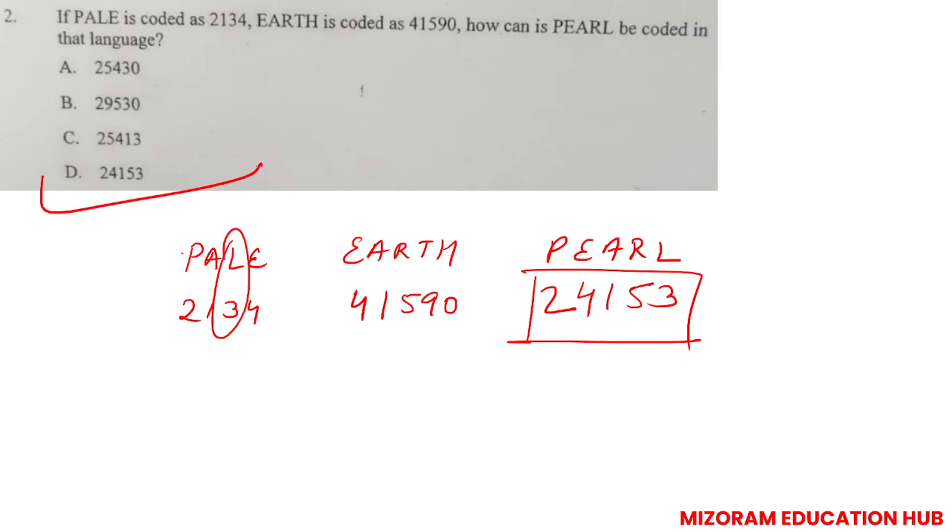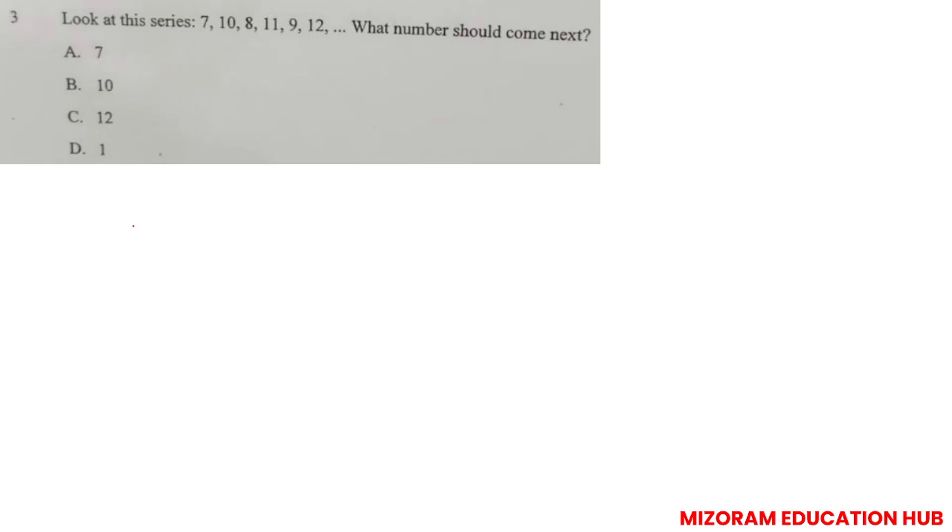Look at the series: 7, 10, 8, 11, 9, 12. Now this is the combination of two different series - 7, 8, 9 and 10, 11, 12. So next will be 13. So 10 is correct.